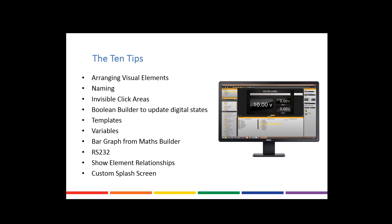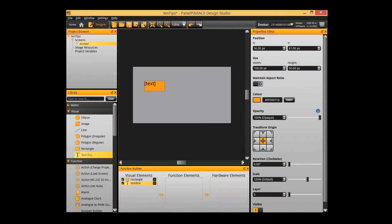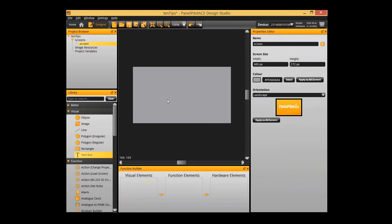Firstly we've got arranging visual elements. A lot of people may not be aware that there are actually several handy options for laying out your visual elements, using the layer functions and stuff like that, that isn't immediately obvious but can actually be very handy. So here is a project I've made earlier. It's currently blank and by the end of this hopefully it'll be a full project that I can share with you all.